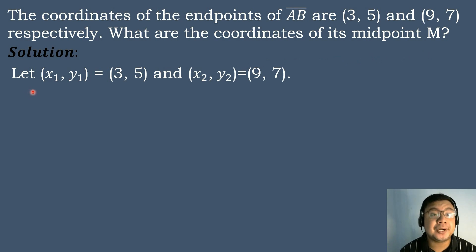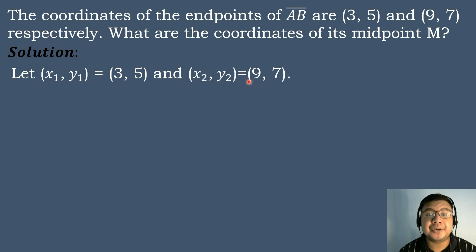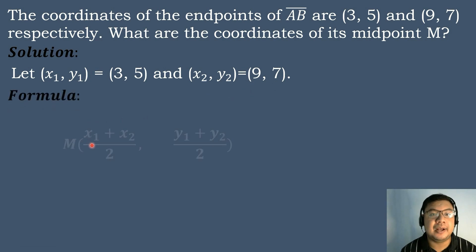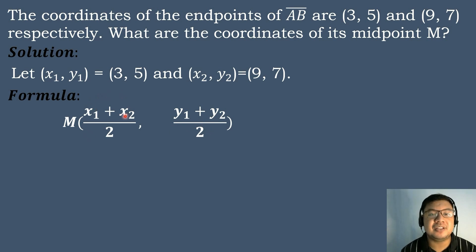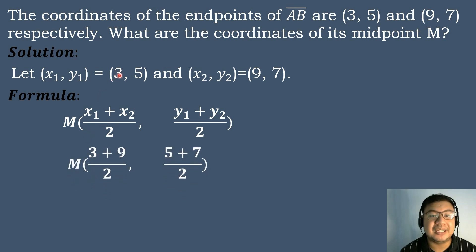Our first step is to let the ordered pair (x sub 1, y sub 1) equal to the ordered pair (3, 5), and the ordered pair (x sub 2, y sub 2) equal to the ordered pair (9, 7). Then after that, we will use the formula. So our formula will be: midpoint x value equals x sub 1 plus x sub 2 divided by 2; the y value equals y sub 1 plus y sub 2 divided by 2. All we need to do is to substitute the corresponding values. So the value of x sub 1 is equal to 3, plus the value of x sub 2 is equal to 9, divided by 2. And then the value of y sub 1 is equal to 5, the value of y sub 2 is equal to 7, divided by 2.